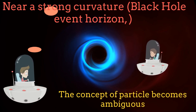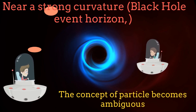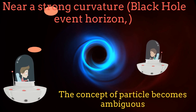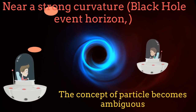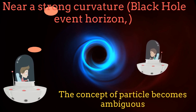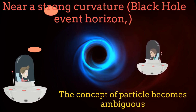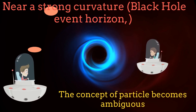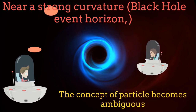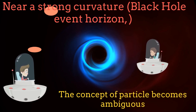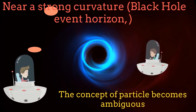The amount of particles perceived by different observers depends on how they define the positive frequency with respect to the source — in this particular case, the black hole.